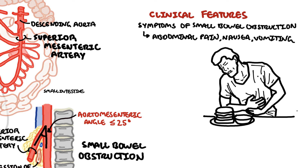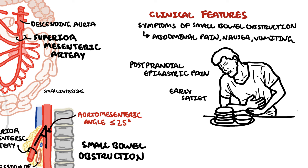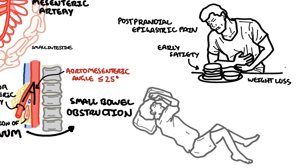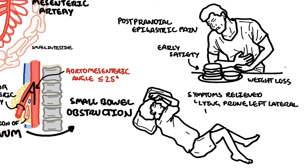Patients with mild obstruction may have only postprandial epigastric pain and early satiety with associated weight loss. Symptoms may be relieved when the patient is lying prone, in a left lateral decubitus position, or in a knee-chest position — like during a lumbar puncture. These positions remove the tension from the mesentery and superior mesenteric artery, opening the space between the superior mesenteric artery and the aorta.